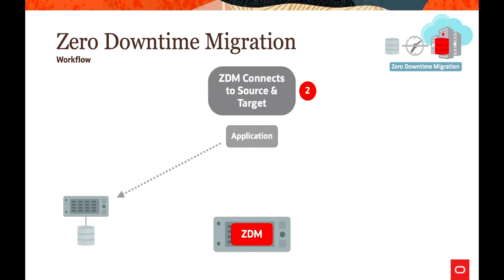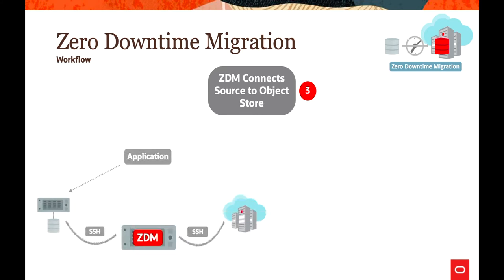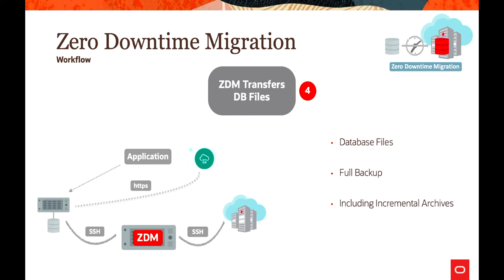In the second phase, we configure connectivity from the ZDM host to both the source and target database servers. It uses SSH keys to establish that connectivity. Once connected to source and target, ZDM will connect with the source database and the object storage in the cloud, using HTTPS connectivity to communicate with the object storage bucket.